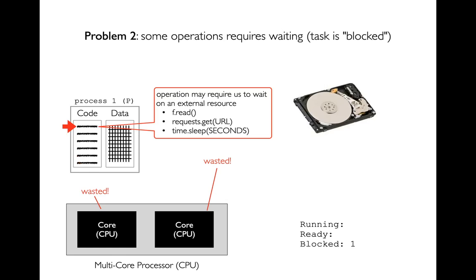Another problem is that code that's running may require waiting. For example, if I do a file.read, I may have to wait for data to be pulled from the hard drive — there's nothing for the CPU to do while that's happening. When that's happening we say the process or thread is in a blocked state — it's not ready to run and not running until it finishes waiting. Other things that cause blocking: network requests like request.get to download from a URL, or calling time.sleep which waits until that amount of time returns.